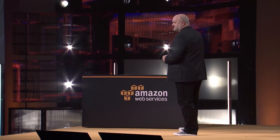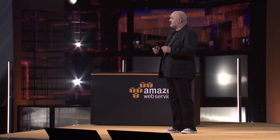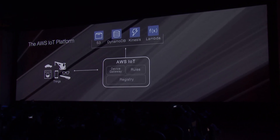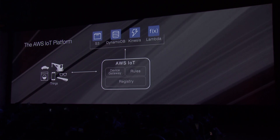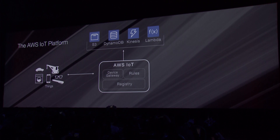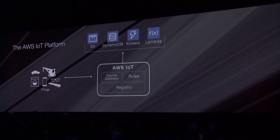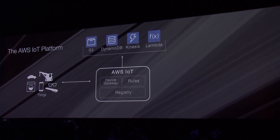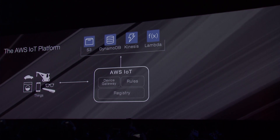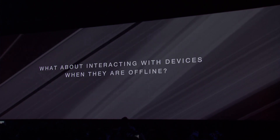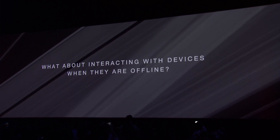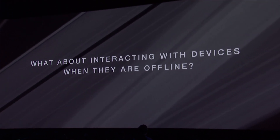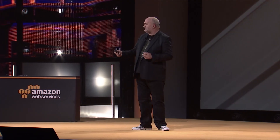There is also something called the registry, where you can keep data about your devices. For example, you can ask the registry to give you all devices in a particular room, making it very easy to keep track of devices. And there's one more piece we haven't talked about yet: it's not only about driving sensor data into the cloud and analyzing or storing it — you also want to actually activate devices. Communicating with those devices might be hard because they may be offline. So we're delivering a very cool piece of the IoT service called device shadows.